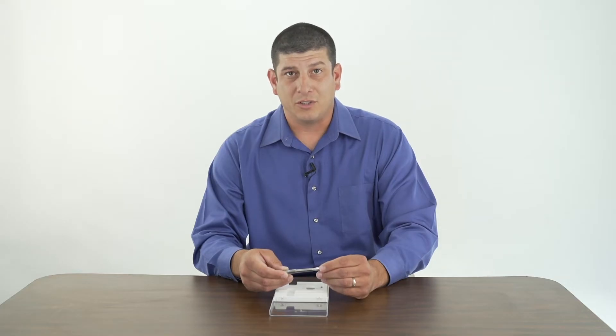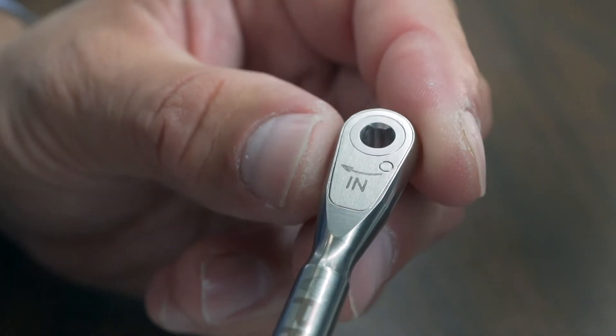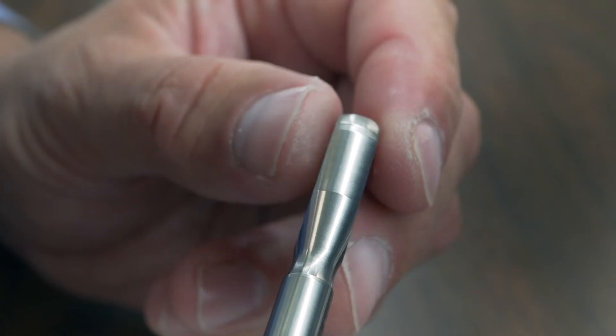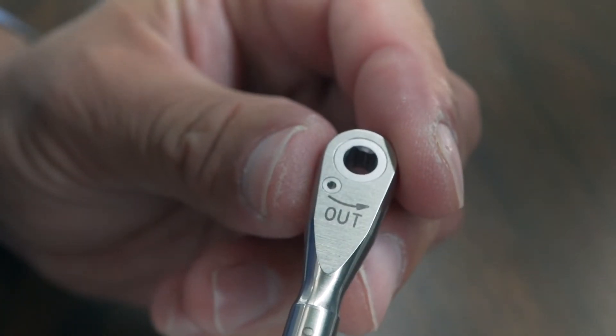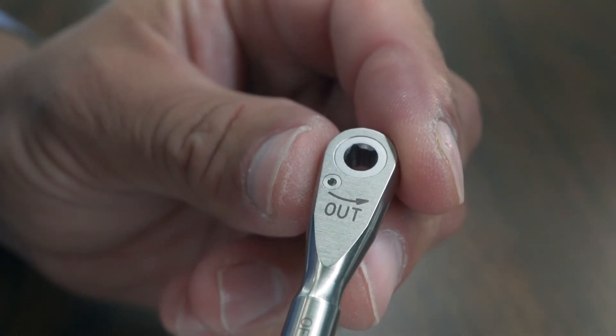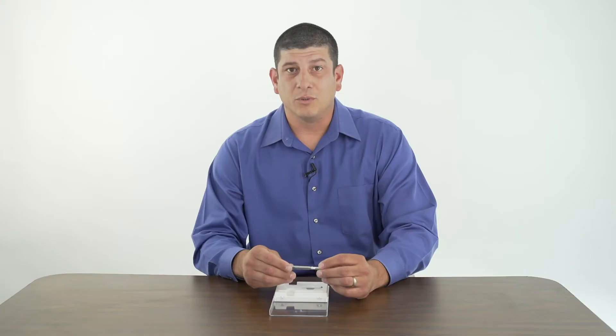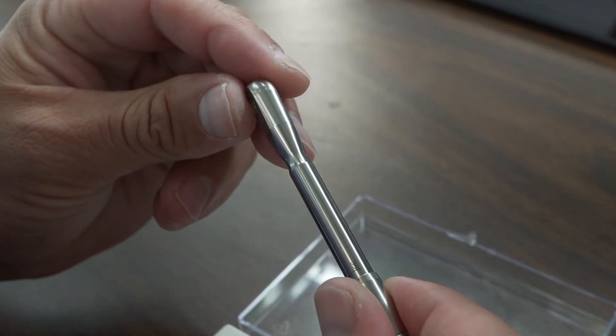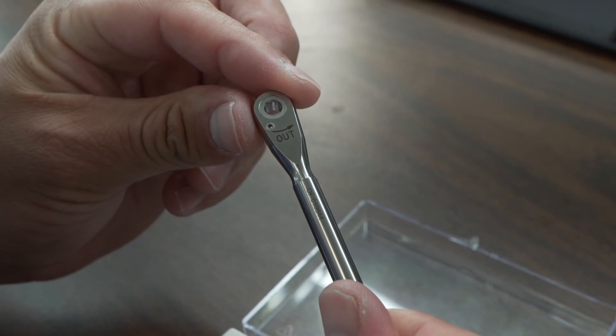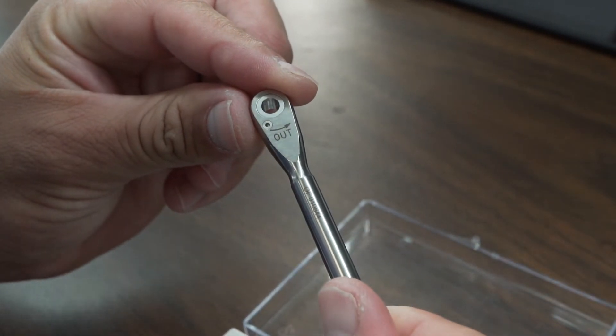Two other features on the tool that are highlighted: on the tool you have a side that reads in and out on the opposite side. You want the in writing facing you as you're torquing an implant screw down. If you wanted to retrieve an implant screw, you're simply going to flip over the tool and you want to make sure the out side wording is facing you as you're removing the screw.